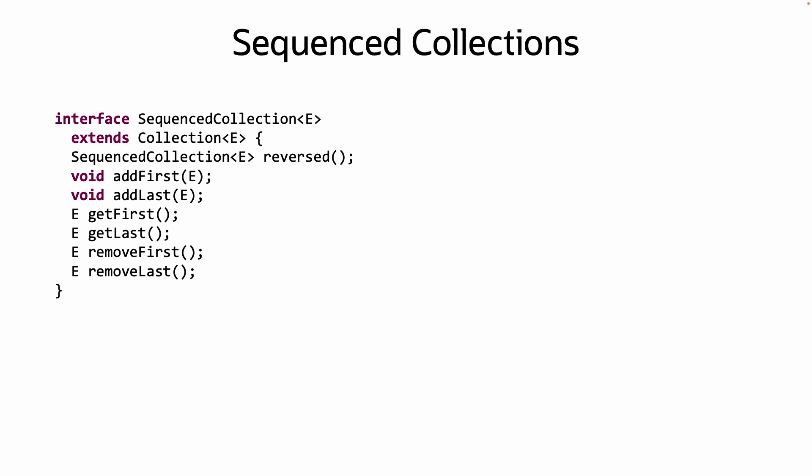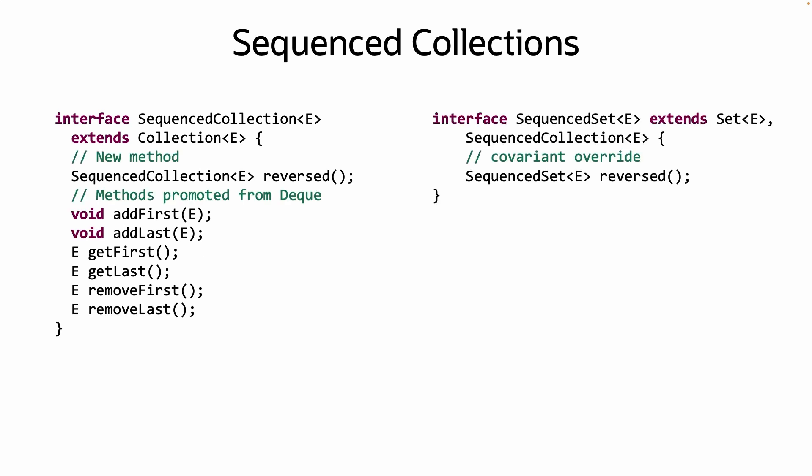it might support modification to the view being written to the underlying collection. AddFirst, AddLast, GetFirst, GetLast, RemoveFirst, RemoveLast were all promoted from the Deque class. SequenceSet simply overrides the reversed method from SequenceCollection to return a SequenceSet.